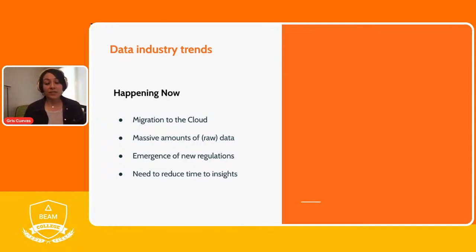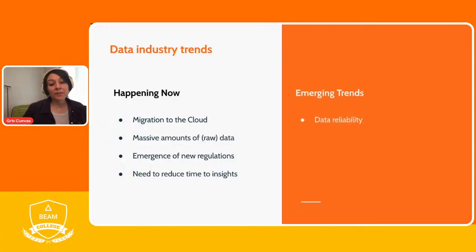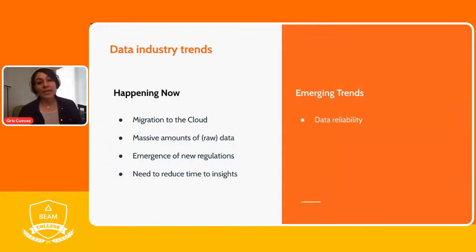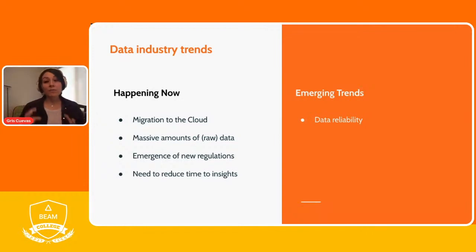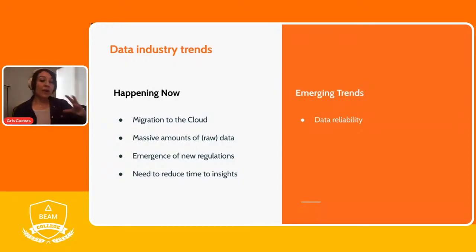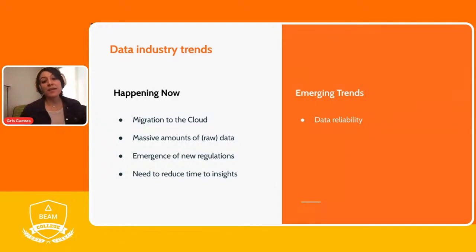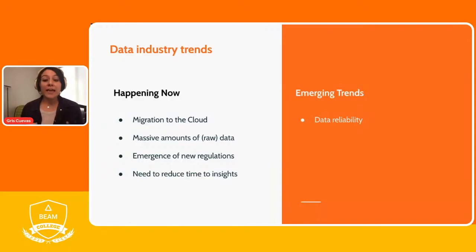Those four trends are happening right now. In the next few years, we're going to see additional trends and initiatives deriving from them. The first is data reliability: as more businesses move to the cloud, data silos are created — some data is on-premises, some is already in the cloud. Point solutions for specific use cases, like storing data in caches or in different types of databases, create these data silos, which is a challenge companies are going to increasingly face.